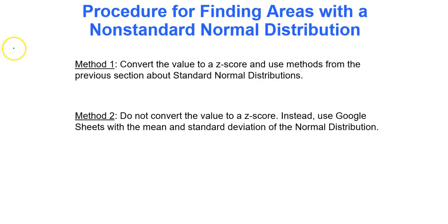When finding areas with a non-standard normal distribution, you have a couple options. First, you convert the value of interest, the data value of interest to a z-score and use standard normal probability tables to find that specific probability associated with that z-score or data value. That's a lot of work.